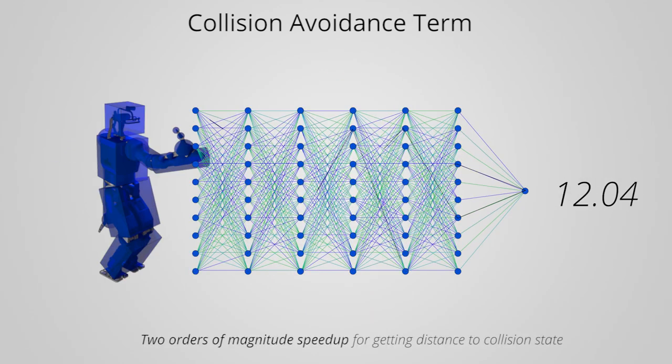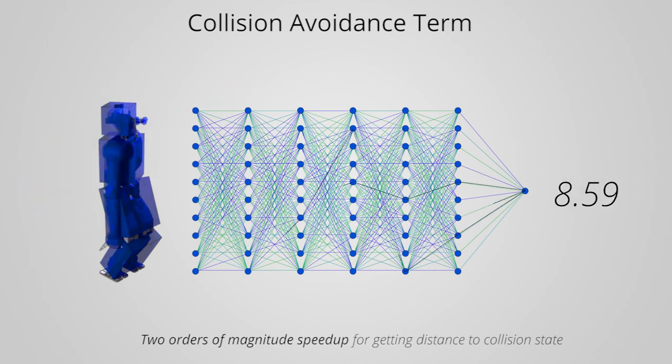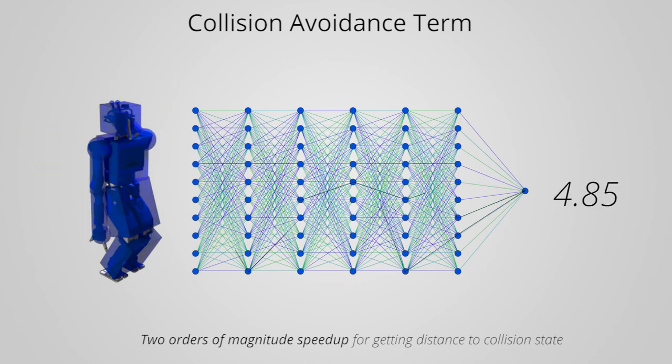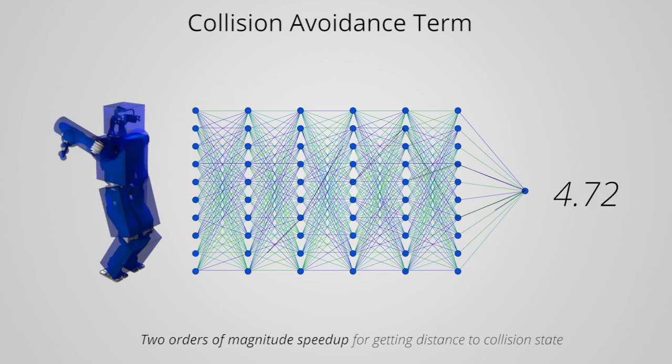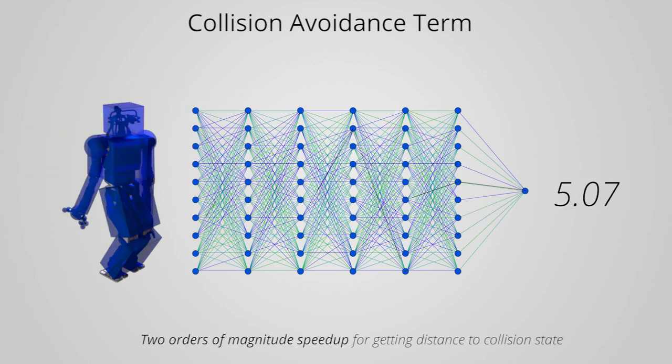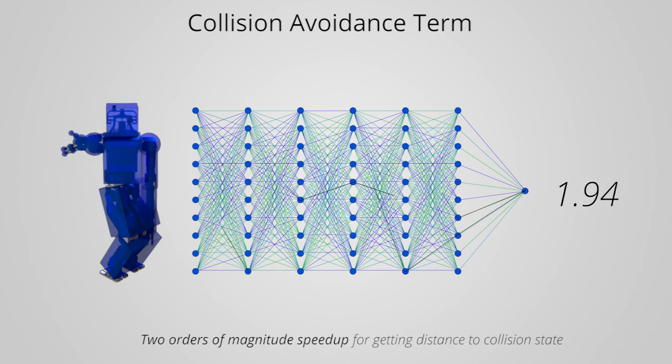So our central idea here is that we can randomly sample hundreds of thousands of instances of this collision potential function and train a neural network to approximate the function instead. The neural network successfully resembles the output from the potential function, but it is two orders of magnitude faster to just do a feed-forward pass through the network, making this plenty fast enough to serve as a single term in our objective function.